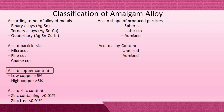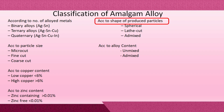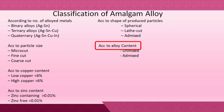Classification according to copper content: low copper with less than 6% copper, and high copper with more than 6% copper. Classification according to zinc content: zinc-containing with more than 0.01% zinc, and zinc-free with less than 0.01% zinc. Classification according to shape of particles: spherical, lathe-cut, and admixed. Classification according to alloy content: unicomposition and admixed.